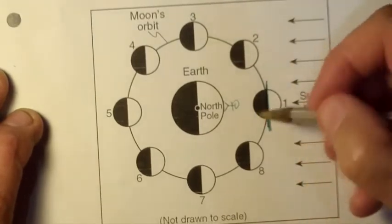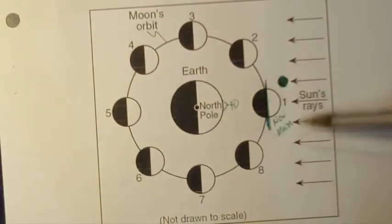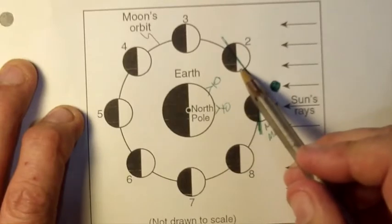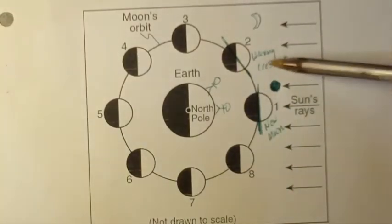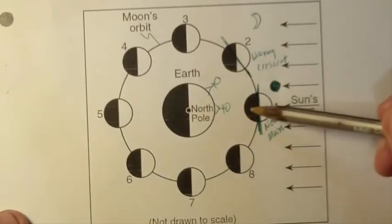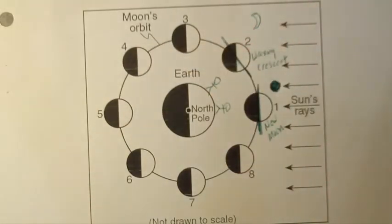Position number one, we'd see no moon at all. That would be the new moon position. At position number two, we see that the right hand side is slightly lit up. We would call this the waxing crescent. As we move from here to here, the moon is going to increase in illumination each night as part of its waxing period.